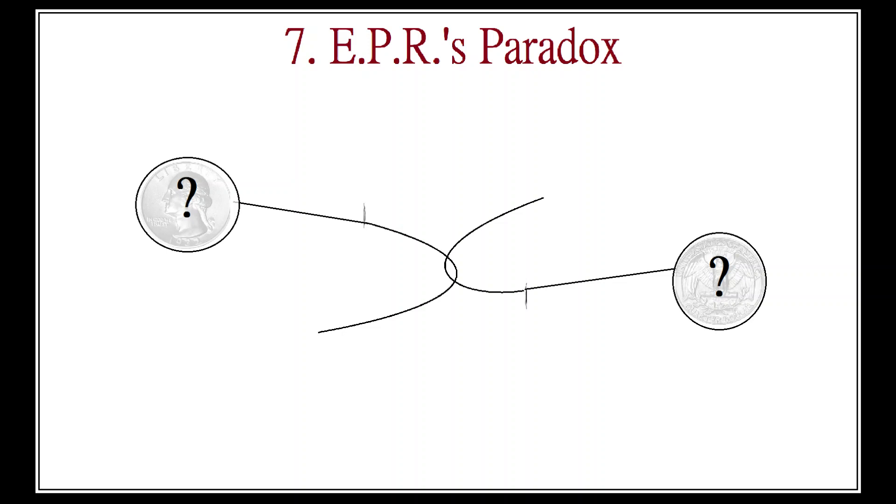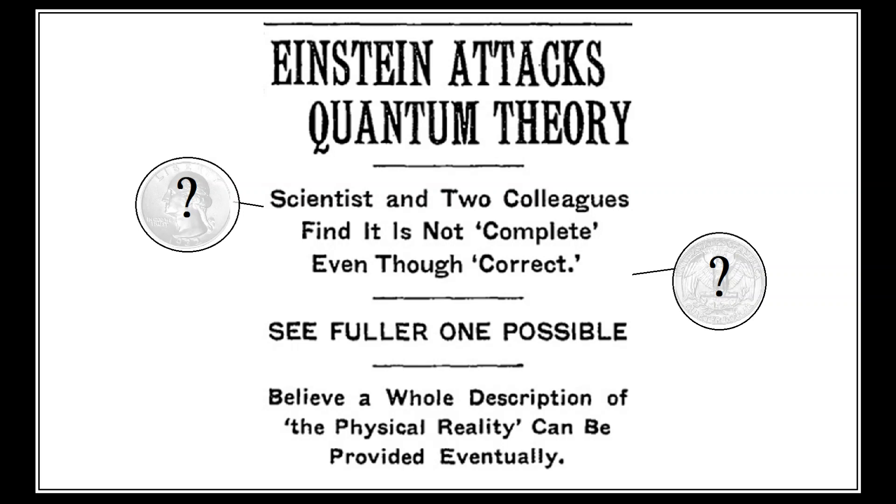Ergo, Bohr's interpretation of quantum mechanics is wrong and quantum mechanics itself is an incomplete theory of reality. That is the Einstein-Podolsky-Rosen paradox in a nutshell.